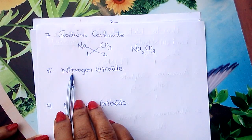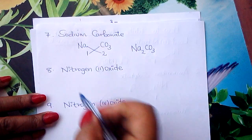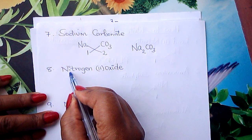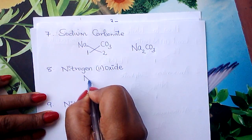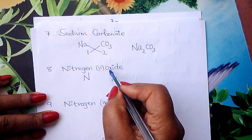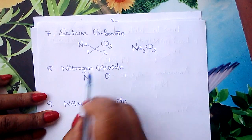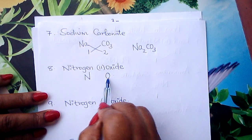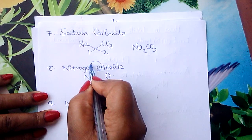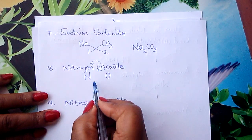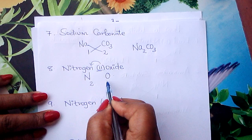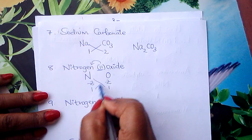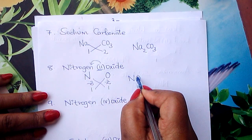We go to nitrogen(II) oxide. It is a compound of nitrogen and oxygen. Symbol for nitrogen is N, symbol for oxygen is O. This II refers to the valency of nitrogen, so valency is 2, and oxygen valency is 2. Divide by 2 to simplify: 1 and 1. Interchange — the formula is NO.